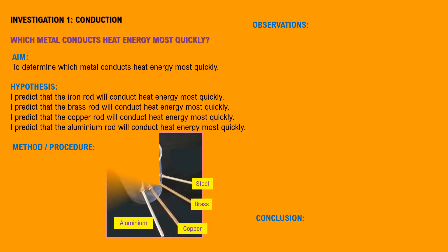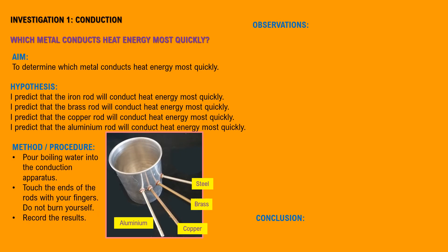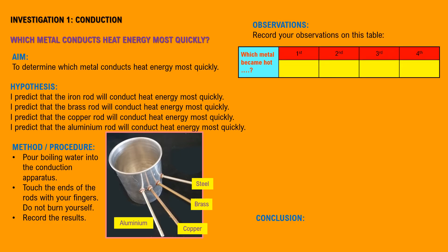To proceed with this investigation, you will need the conduction apparatus as shown here. The conduction apparatus has four metal rods: a brass rod, an aluminum rod, a steel rod, and a copper rod. Pour boiling water into the conduction apparatus and touch the ends of the rods with your fingers — do not burn yourself. Record your observations on the table below. You should observe that the copper rod conducts heat energy most quickly.